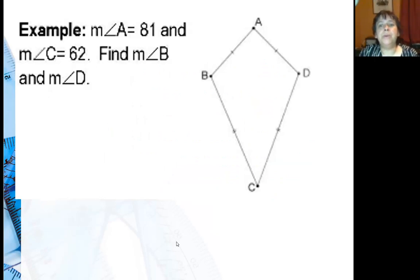In this example, we're going to find the measure of angle B and the measure of angle D in this kite. I did tell you angle A is 81, angle C is 62. B and D will be congruent, because they're between the non-congruent sides. See how they're included between the non-congruent sides. So I'll put an X there and there.